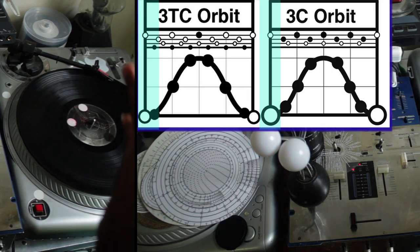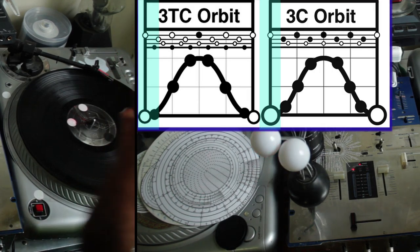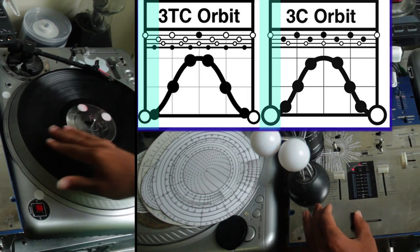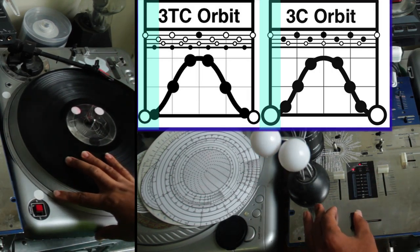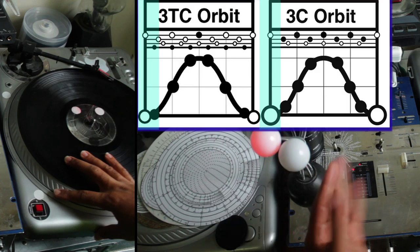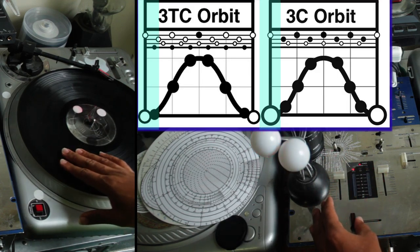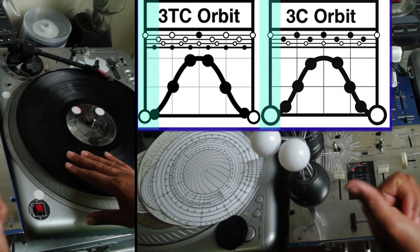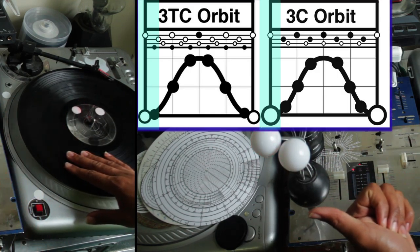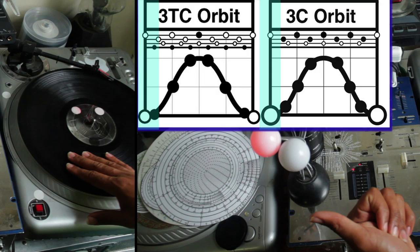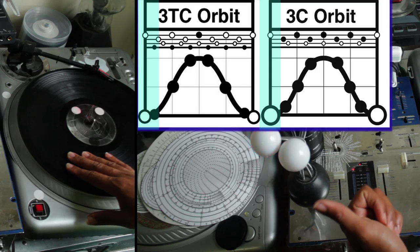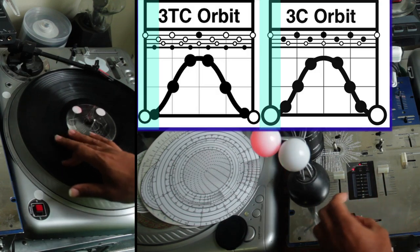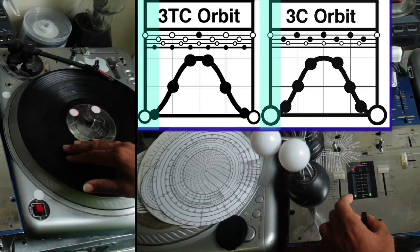Now we're going to start with some three-clickers. This is three-click orbit — we could also call them three-click flares — and there are two different main types. This first one, the clicks are evenly spaced apart, and it sounds like this.